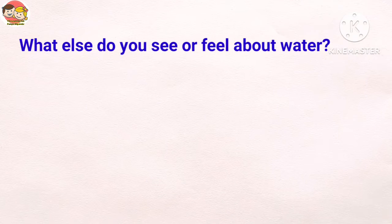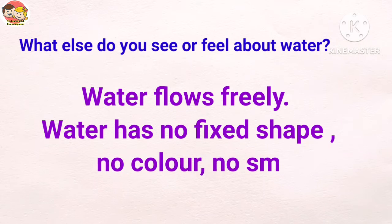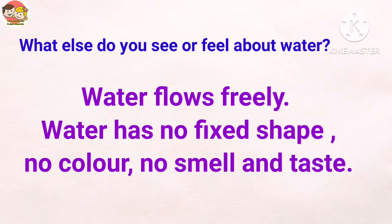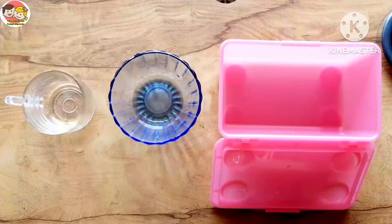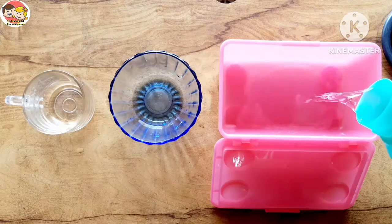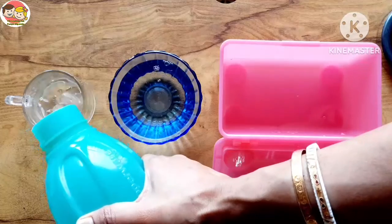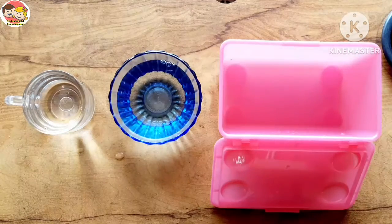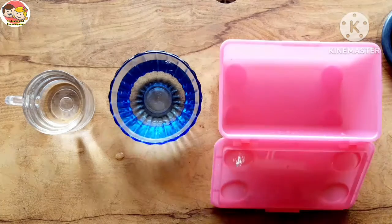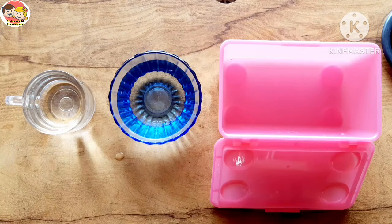What else do you see or feel about water? Water flows freely. Water has no fixed shape, no color, no smell, and no taste. Water takes the shape of the container into which it is poured. Children, let's do an interesting activity. Pour the same amount of water into a container, a bowl, and a cup. Look at the shape of water in different vessels — water takes the shape of the container into which it is poured. So water doesn't have any fixed shape.